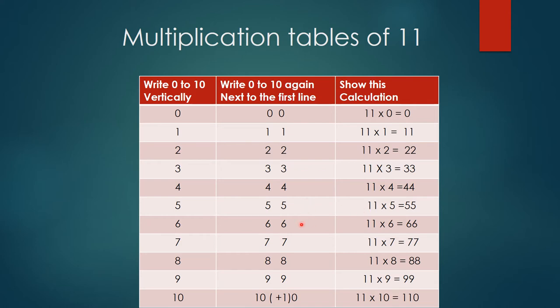6 and 6 is 66, 11 × 6 = 66. 7 and 7 is 77, 11 × 7 = 77. 8 and 8 is 88, 11 × 8 = 88. 9 and 9 is 99, 11 × 9 = 99.